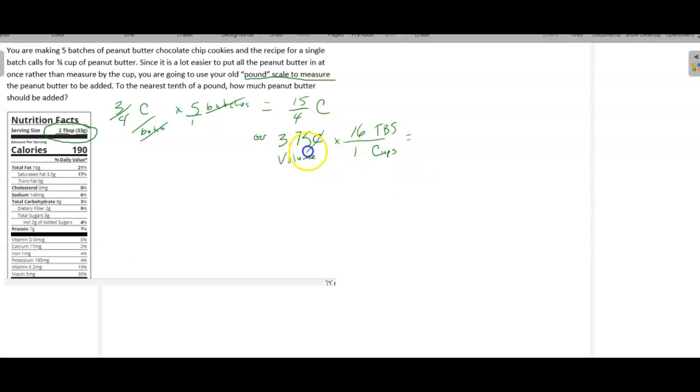So there's 16 tablespoons in one cup. So let's convert this first. So our cups will reduce and we get 3.75 times 16. And that is 60 tablespoons. That's how many tablespoons we need total. So now 60 tablespoons.